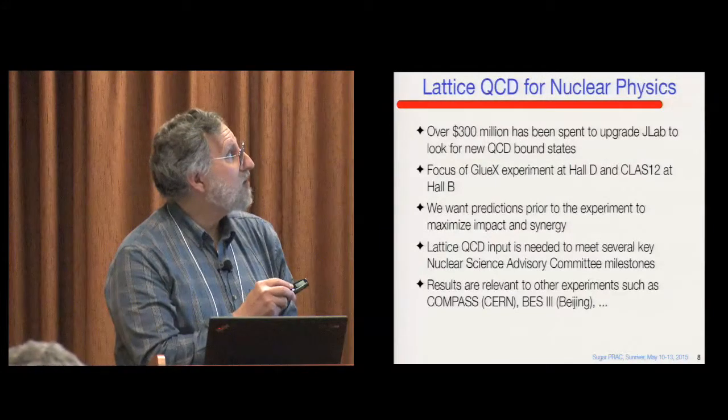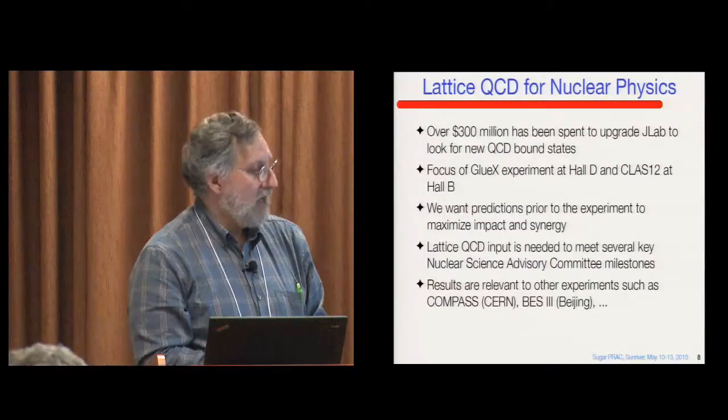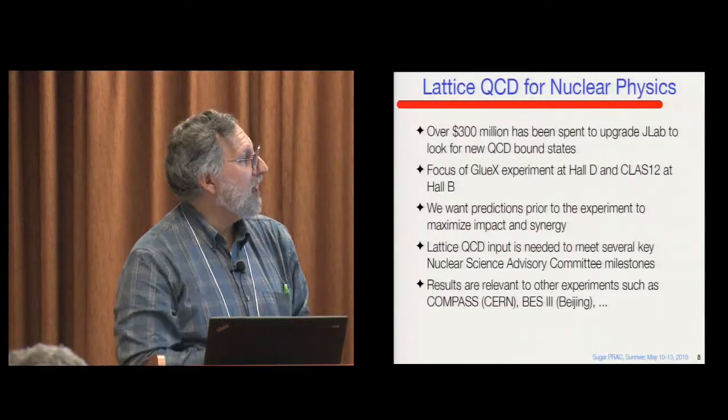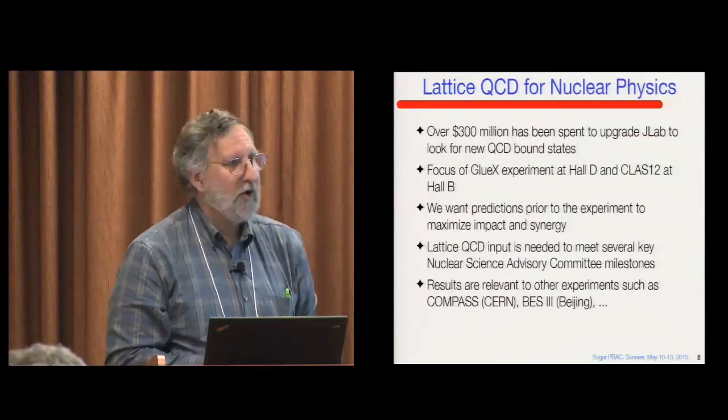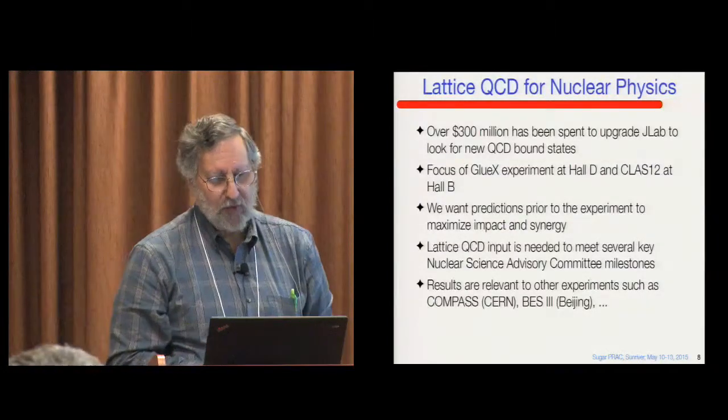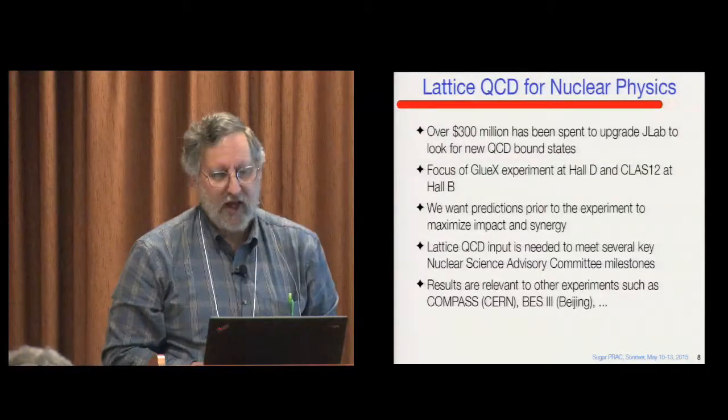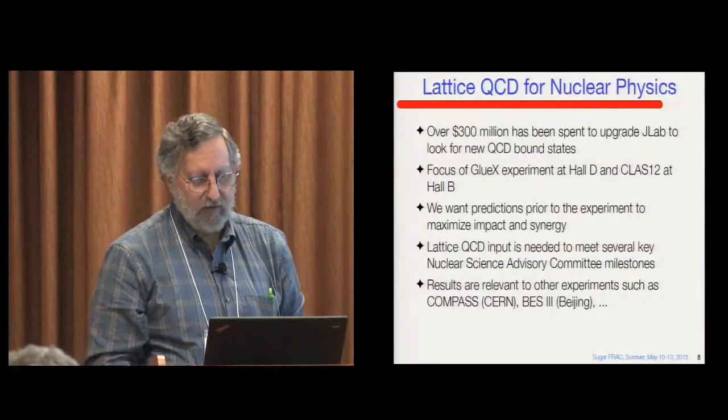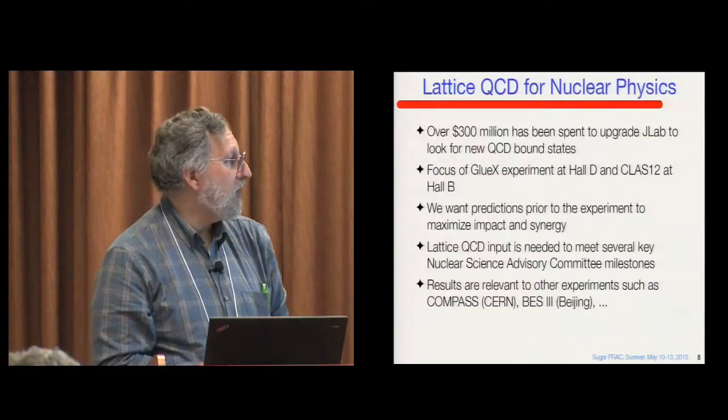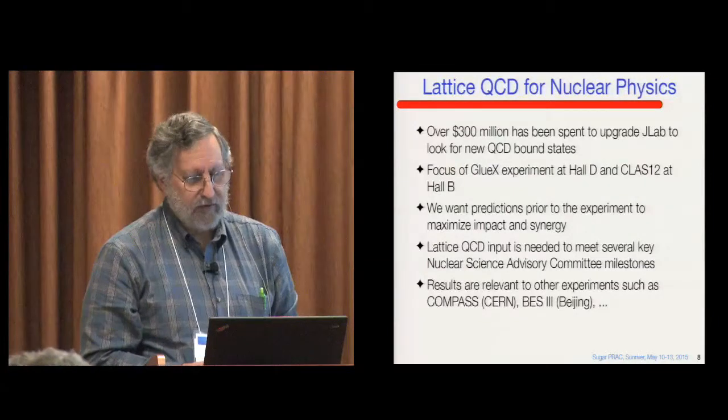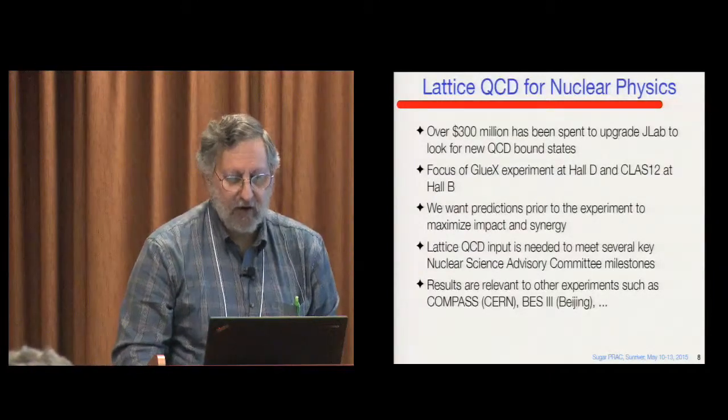Going back to the nuclear side, $300 million has been spent to upgrade Jefferson Lab to look for these bound states, the exotic bound states that I mentioned. And the GLU-X experiment at Hall D and the Class II experiment at Hall B are two of the experiments that are doing that. And Craig Steffen is one of the people who worked on the precursor of the GLU-X experiment, which I just verified. He was a grad student at IU. I'll mention Craig again later. Now it would be best if we can get predictions for these decays to guide the experiment. Predictions are always more convincing for theorists than post-dictions. There are a number of other milestones for Lattice QCD that have been defined by the Nuclear Science Advisory Committee. And so we'd like to be able to fulfill those as well. And Blue Waters will help us do that. There are several other experiments that I've listed here that are relevant to this program. So Blue Waters helps us a great deal.